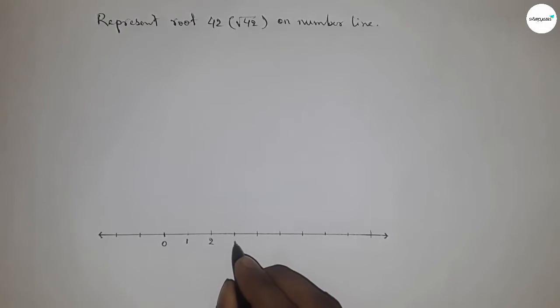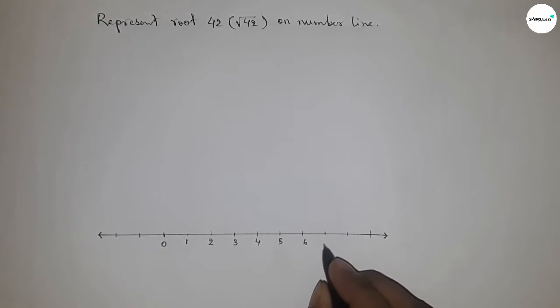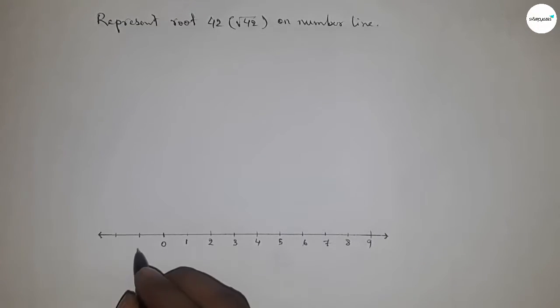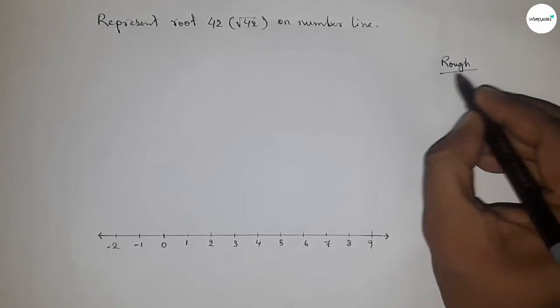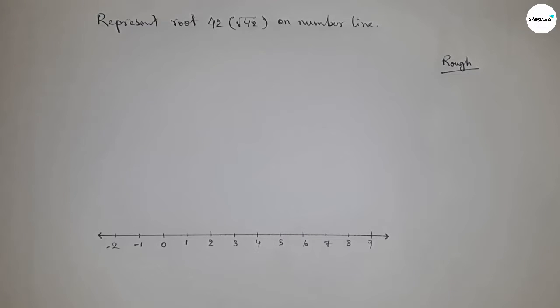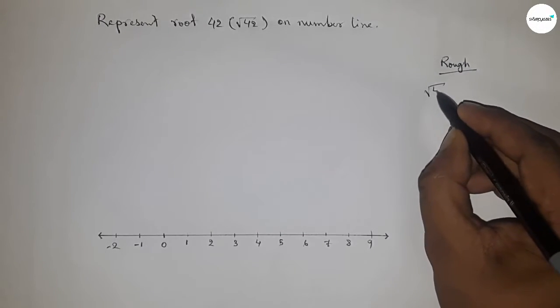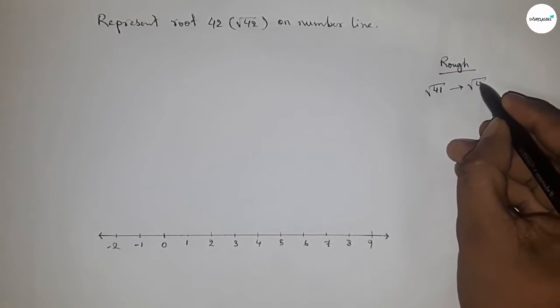This is one, two, three, four, five, six, seven, eight, nine and so on. And this side minus one, minus two and so on. Okay. Now roughly discussing the calculation.